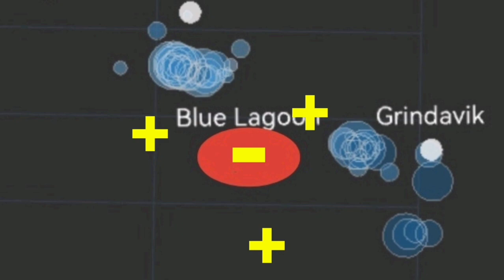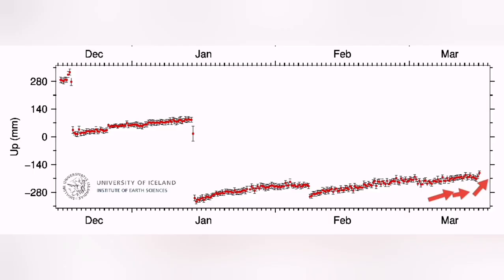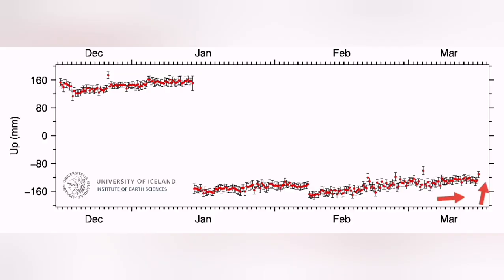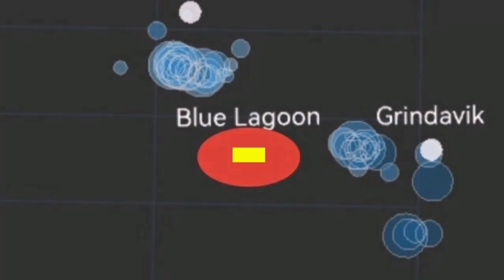Beyond the Thorbjorn, we have another site, ASVE. You see them on the map, and we see uplift due to the magma accumulation. Further down toward the east of Grindavik, we have AUSV, which shows some uplift due to the accumulation of magma, not as much as the previous one.